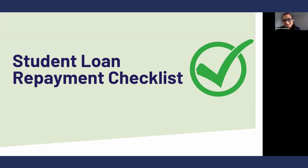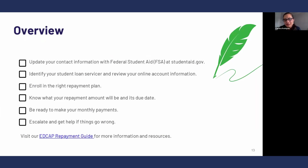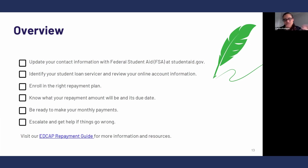Student loan repayment checklist — this is kind of an overview. We actually have an entire toolkit on our website that provides more information about this checklist. The first thing you want to do is make sure that studentaid.gov, which is the National Student Loan Database the government manages, has your updated contact information. We have a short video on how to update your contact information on studentaid.gov. If you don't know who your student loan servicer is right now, you need to find out — you can find out through studentaid.gov by going to your dashboard.